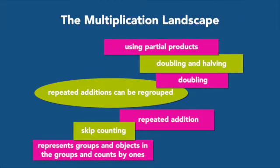Automatization of the basic facts is absolutely critical, but we want to be using the landscape to work on the development of the facts. The fact that repeated additions can be regrouped is a critical big idea for children. The fact that you can double — so for example, when you're looking at the basic facts, two times four is one children often learn early on. To do four times four, you're practically done — you just double. Eight times four is done. You've doubled.